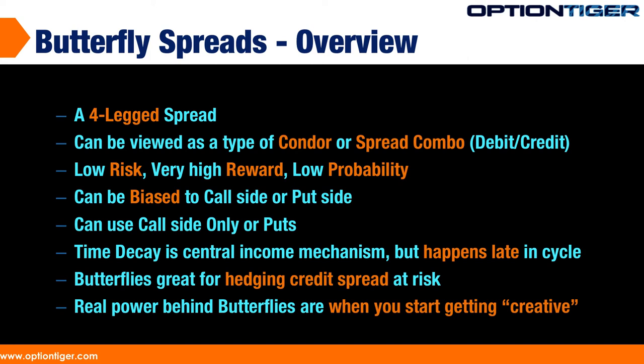Time decay is the central income mechanism. Basically, at the end of the day, it's an income strategy, but the only problem is it happens late in the cycle. So if you put a butterfly a couple of months ahead of expiry, it's unlikely that you're going to see the position move on a day-to-day basis.